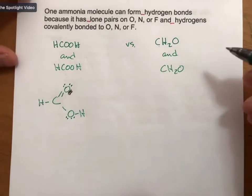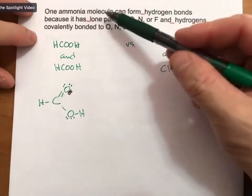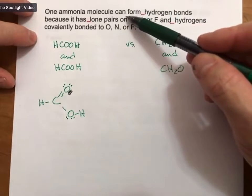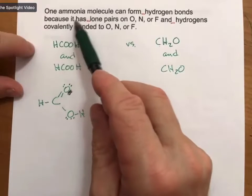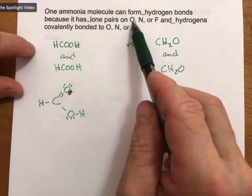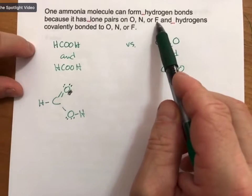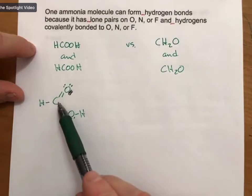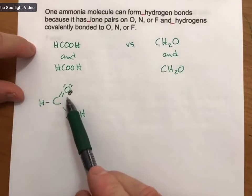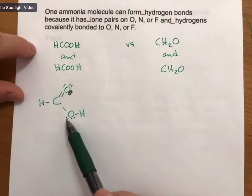And what I'm trying to ask you to do here is, so one ammonia molecule, or let's do this. This molecule can form blank hydrogen bonds because it has blank lone pairs on oxygen, nitrogen, or fluorine, and blank hydrogens. Well, let's look at this molecule. This molecule has one, two, three, four.